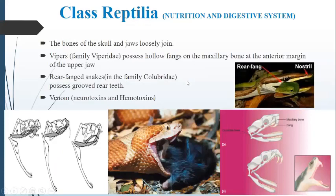Moving on to the skull. We are studying nutrition and the digestive system. The bones of the skull and jaws are loosely joined — you can see they are very loosely joined and can be separated easily to widen the mouth opening.